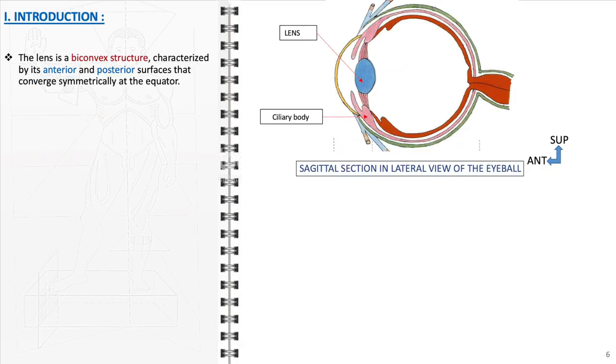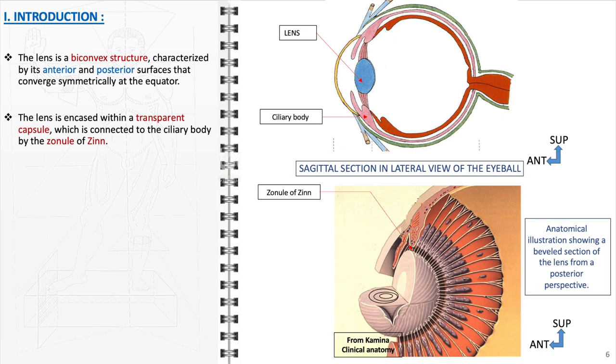The lens is a biconvex structure, characterized by its anterior and posterior surfaces that converge symmetrically at the equator. This unique shape is essential for focusing light onto the retina. The lens is securely encased within a transparent capsule which is intricately connected to the ciliary body by the zonule of Zinn, a series of fibrous strands. These connections facilitate the lens's ability to change shape during the process of accommodation, thereby adjusting focus for near and distant vision.